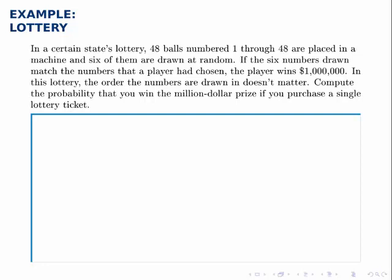In a certain state's lottery, 48 balls numbered 1 through 48 are placed in a machine, and 6 of them are drawn at random. So we get 6 distinct numbers, there's no repetition.